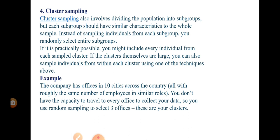For example, a company has offices in 10 cities across the country, all with roughly the same number of employees in similar roles. You don't have the capacity to travel to every office to collect your data, so you use random sampling to select 3 offices from those 10.